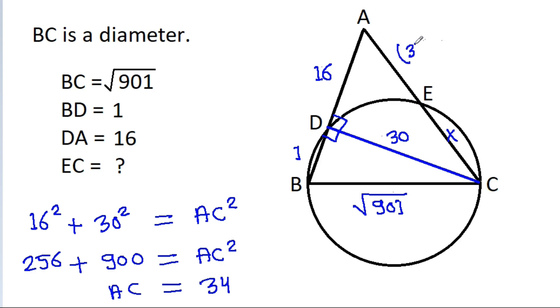So AE will be 34 minus X. And now we can use AD times AB equals AE times AC.